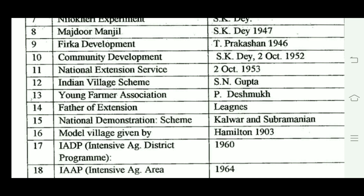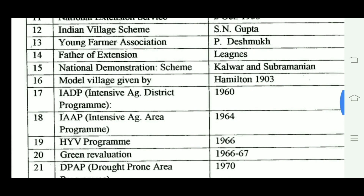IADP — Intensive Agriculture District Program — was introduced in the 1960s as a package program. IAP — Intensive Agriculture Program — was introduced in 1964.